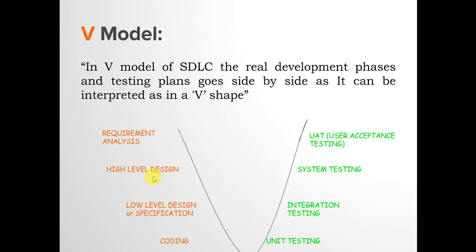In the V model, with requirement analysis, UAT is planned; with high-level designing, system testing is planned; with low-level designing or specification, integration testing is planned; and with coding, unit testing is planned. On the execution side, once coding is done, unit testing is performed, followed by integration testing, then system testing, and finally UAT. The left side of the V represents planning and the right side represents execution.